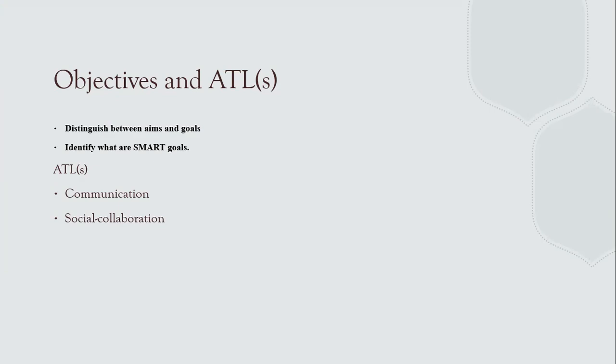In order to write specific, measurable, achievable, realistic, and time-specific goals, you must differentiate between an aim and a goal. We will also provide you with diverse statements for you to distinguish and discuss whether they are goals or aims, and state why.